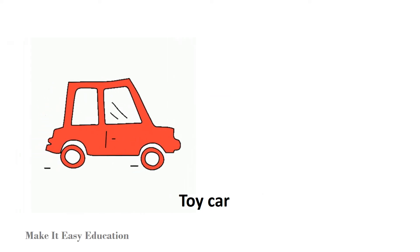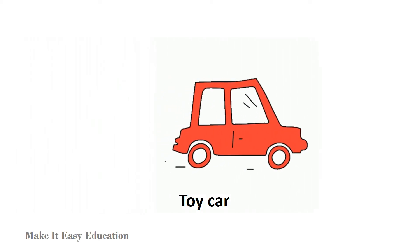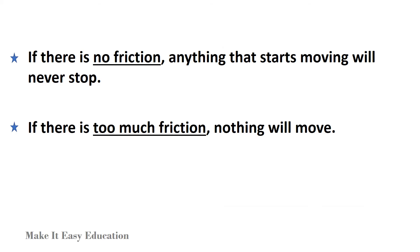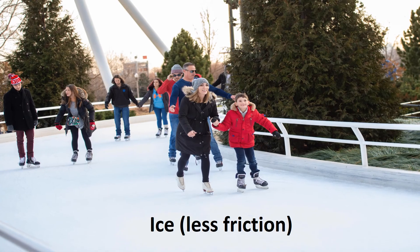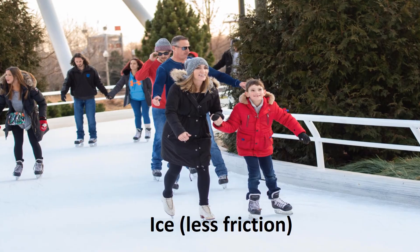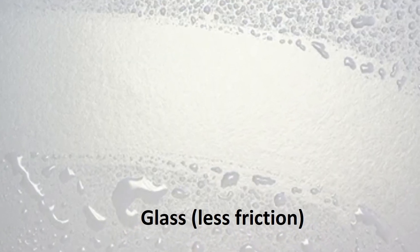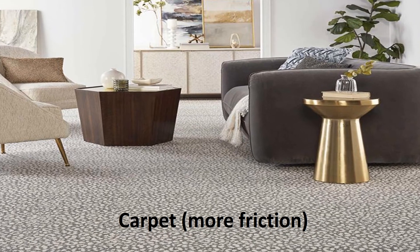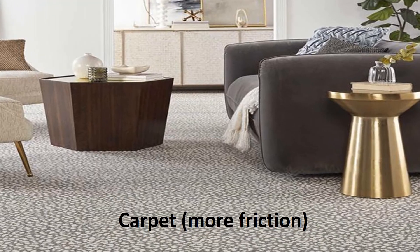As a result, the object either slows down or stops moving. If there is no friction, anything that starts moving will never stop. If there is too much friction, nothing will move. In general, materials with a smooth surface, like ice or glass, cause less friction than materials with a rough surface, like carpets.